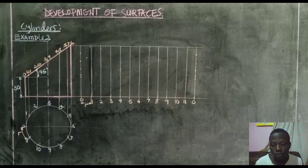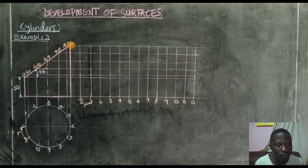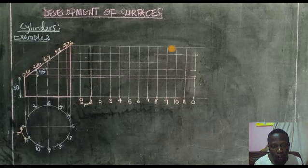But since it is cut, we also need to put that into consideration. So we are going to project our lines horizontally from the points on the cut surface of the cylinder. And when you do that, you have these lines as you can see. You have zero, one, two, three, four, five until you conclude them.